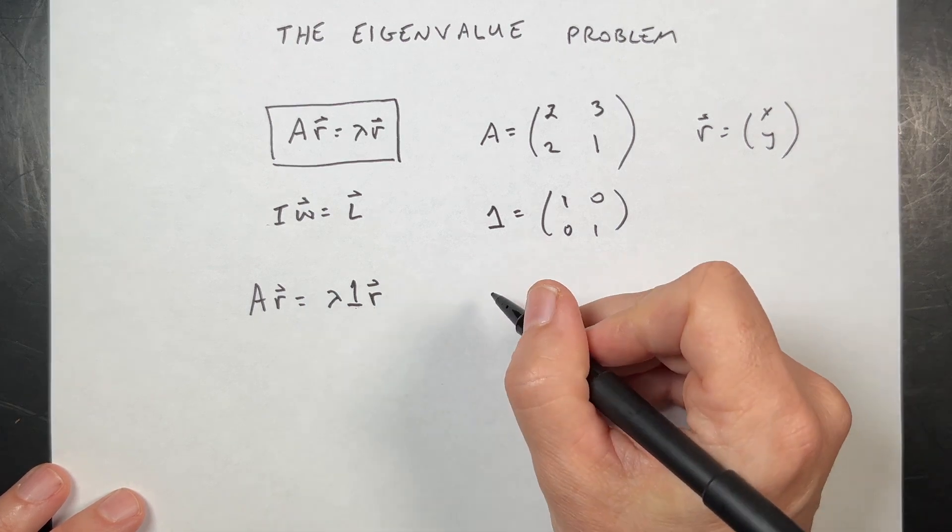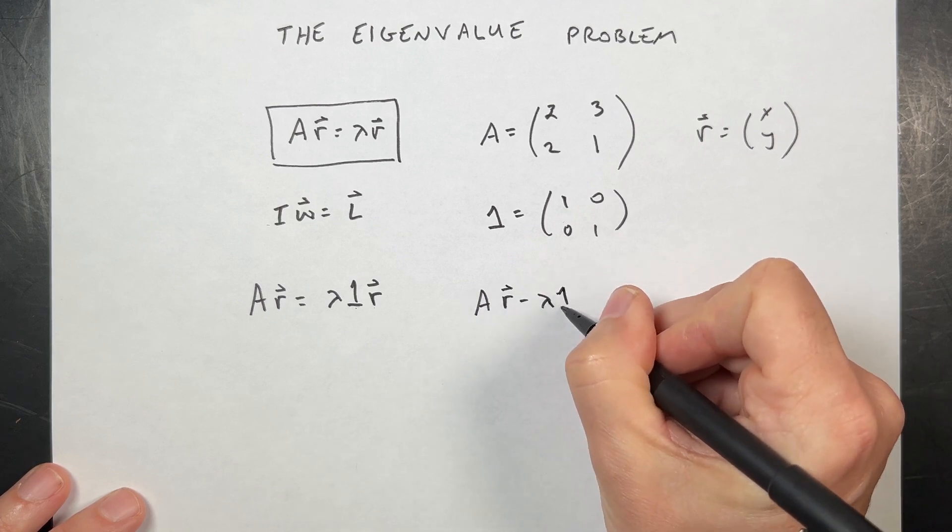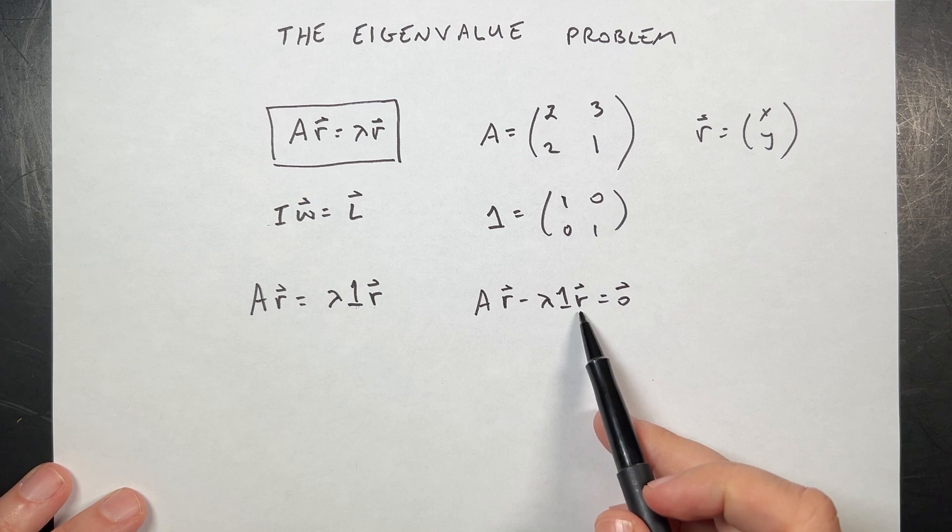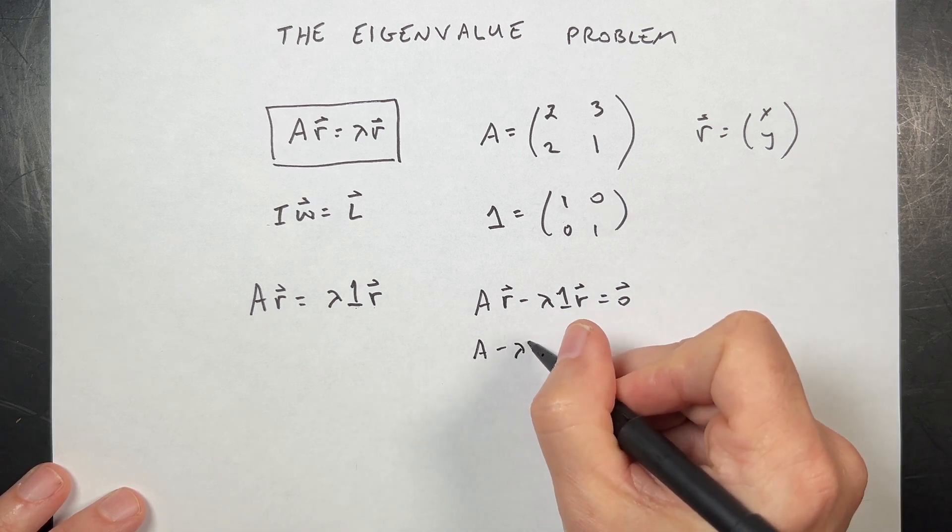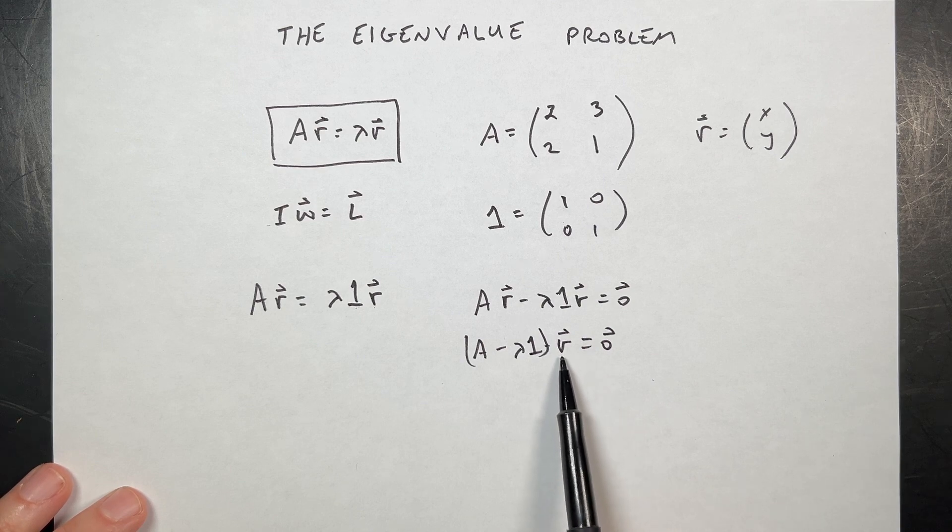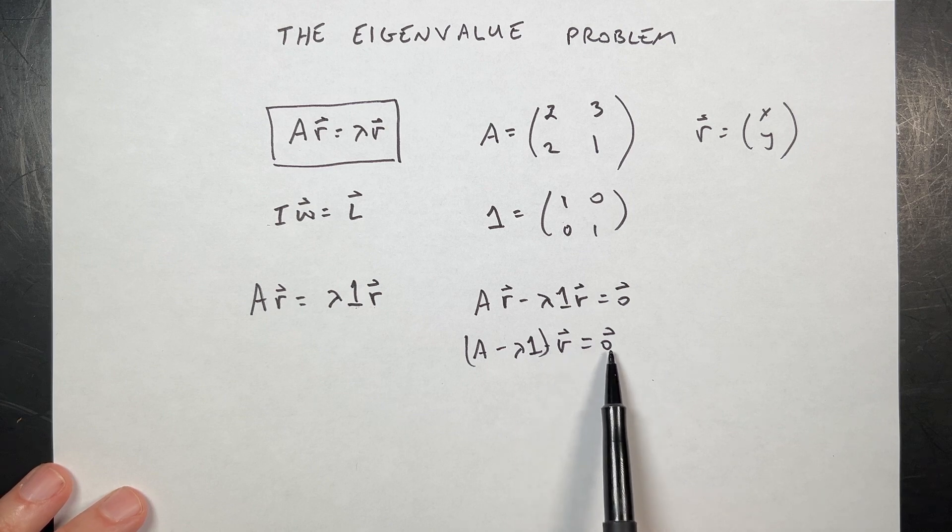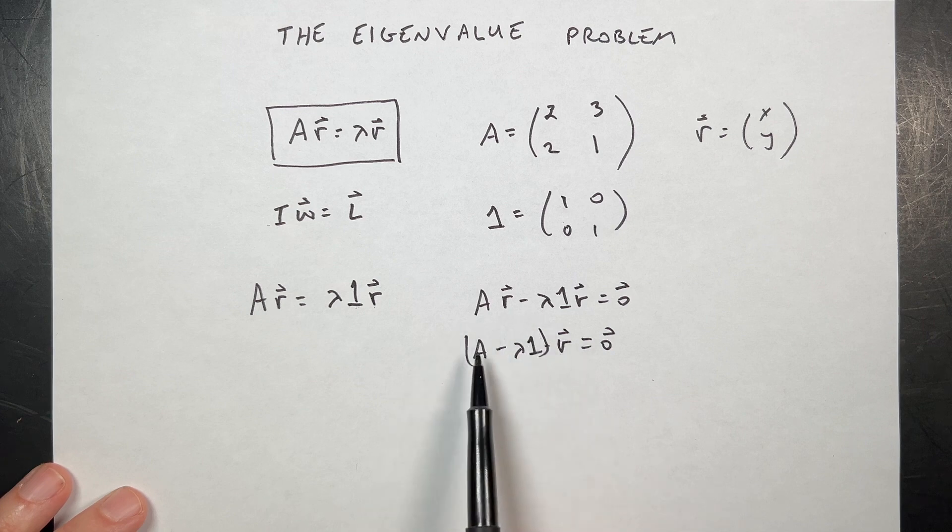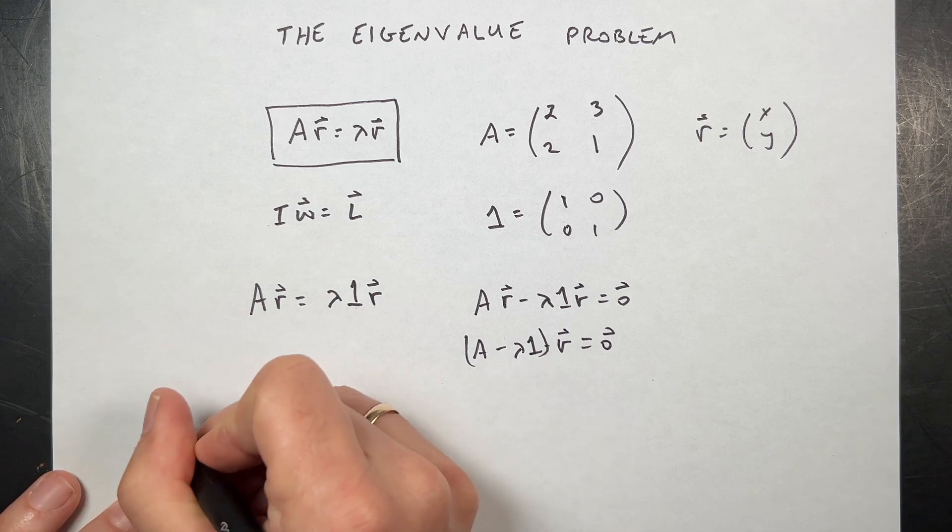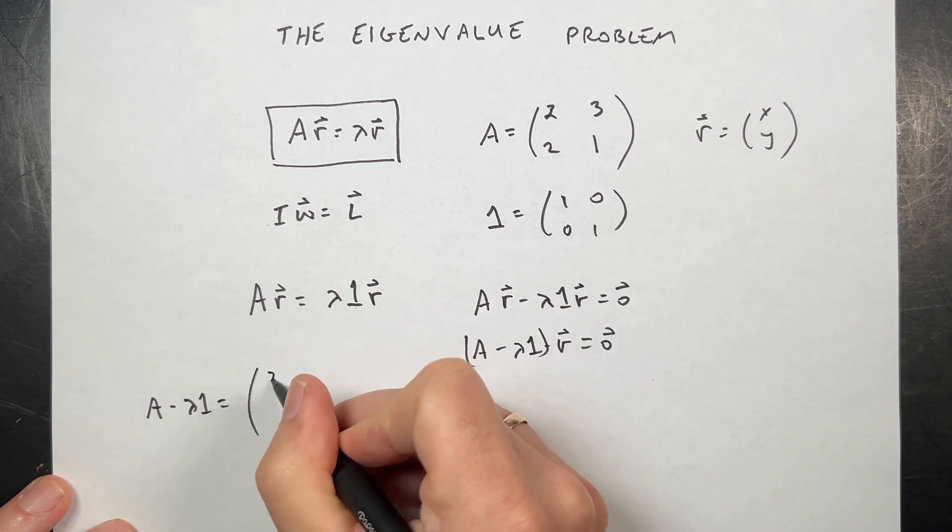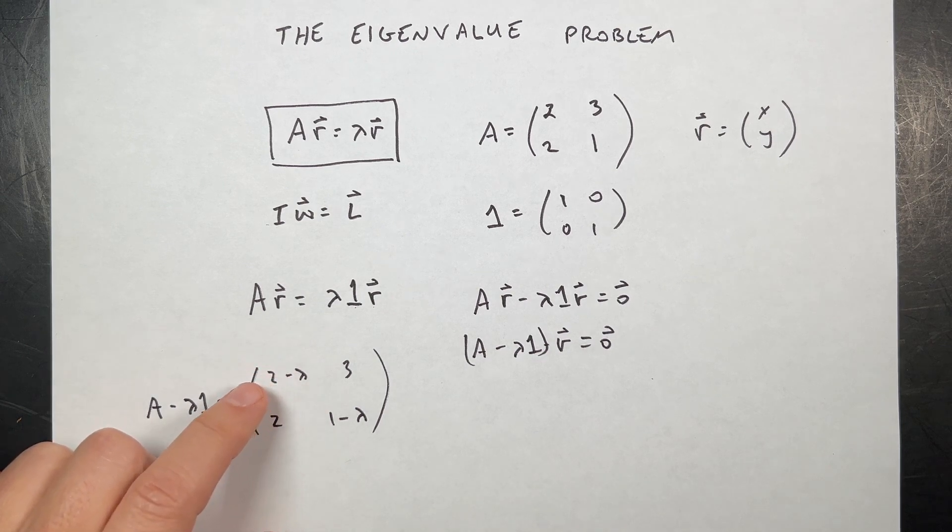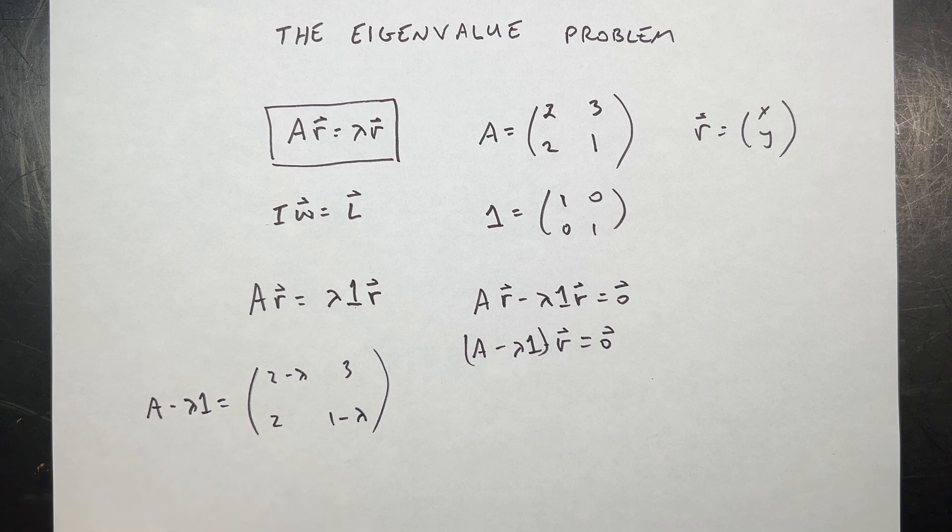But now I can subtract this from both sides and I get A*R minus λ*1*R equals 0. And that is the zero vector because it's still a vector solution. But now I can factor out this R and I get (A - λ*1)*R equals 0. So how do I solve this equation? Well, I could have the solution where R is equal to 0. We call that boring, right? Because if this is 0, it's equal to 0, then duh. So the other way is to say that this thing has to somehow be 0. And one thing we can do with that is to say the determinant of this is 0. So let's write out this A - λ*1 is going to be this: 2 - λ, 3, 2, 1 - λ. And I want to take the determinant of that set equal to 0. And then that will give me my eigenvalues λ.